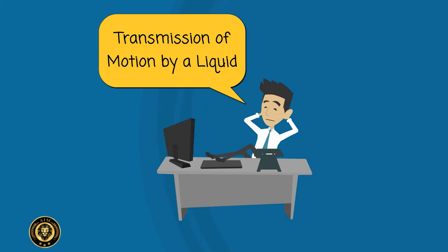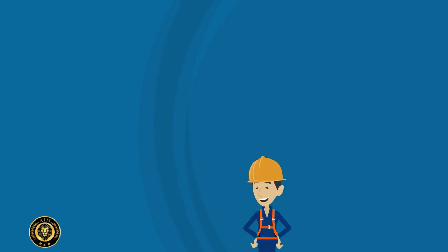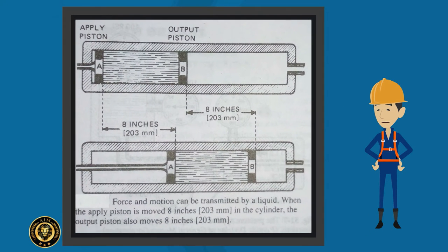Transmission of motion by a liquid: Figure shows two pistons in a cylinder with a liquid between the pistons. When the input or applied piston is pushed in 8 inches, the output piston will be pushed the same distance.